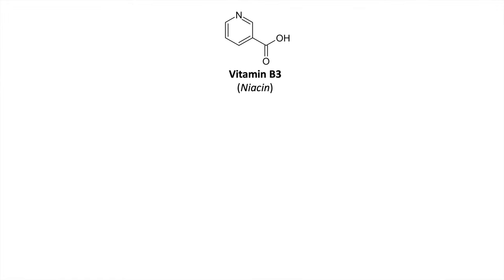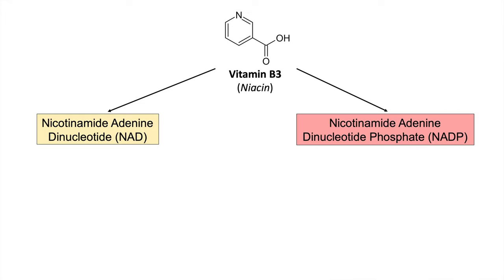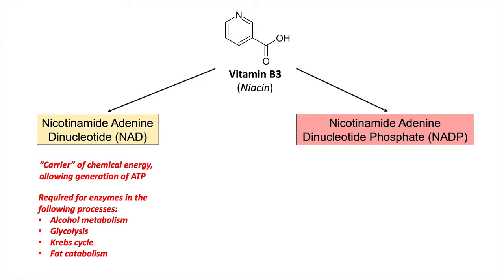We need vitamin B3 for the production of two important cofactors: nicotinamide adenine dinucleotide (NAD) and nicotinamide adenine dinucleotide phosphate (NADP). NAD is a carrier of chemical energy, allowing generation of ATP — adenosine triphosphate — the cell's energy source. It is also required for other enzymes as well.